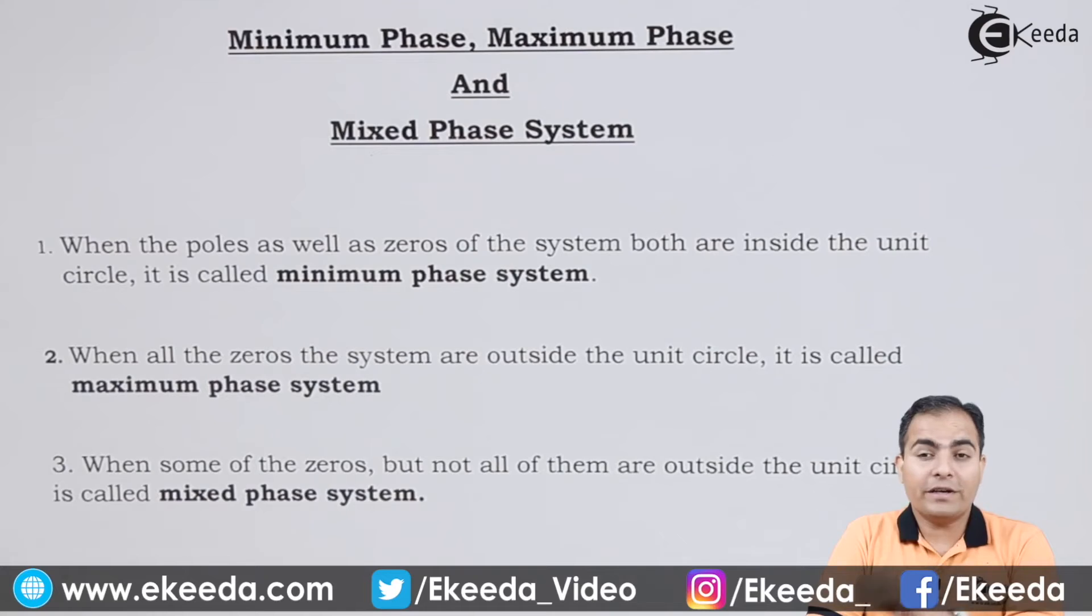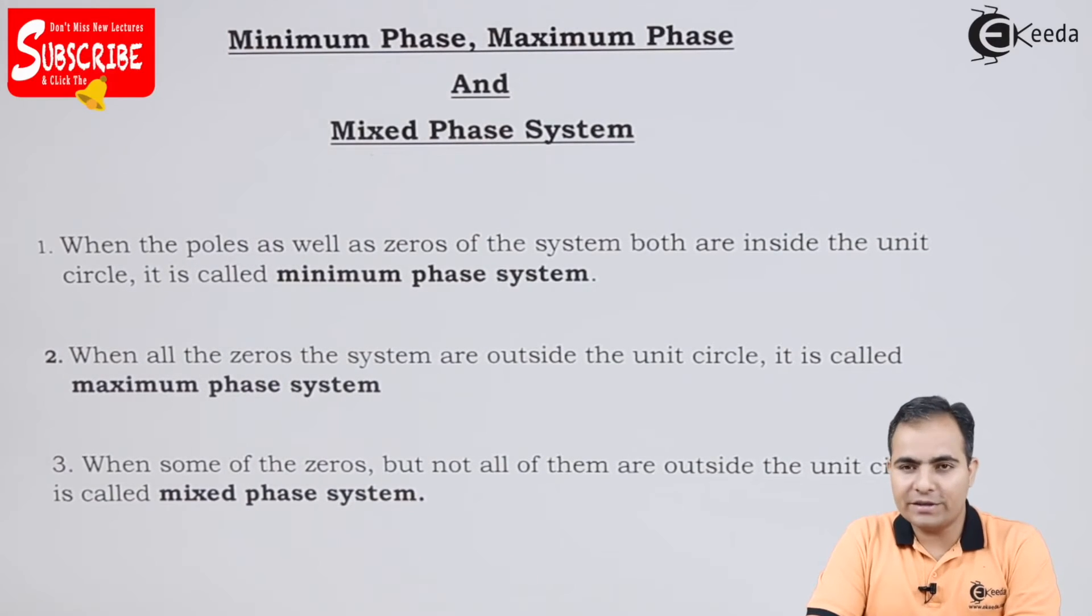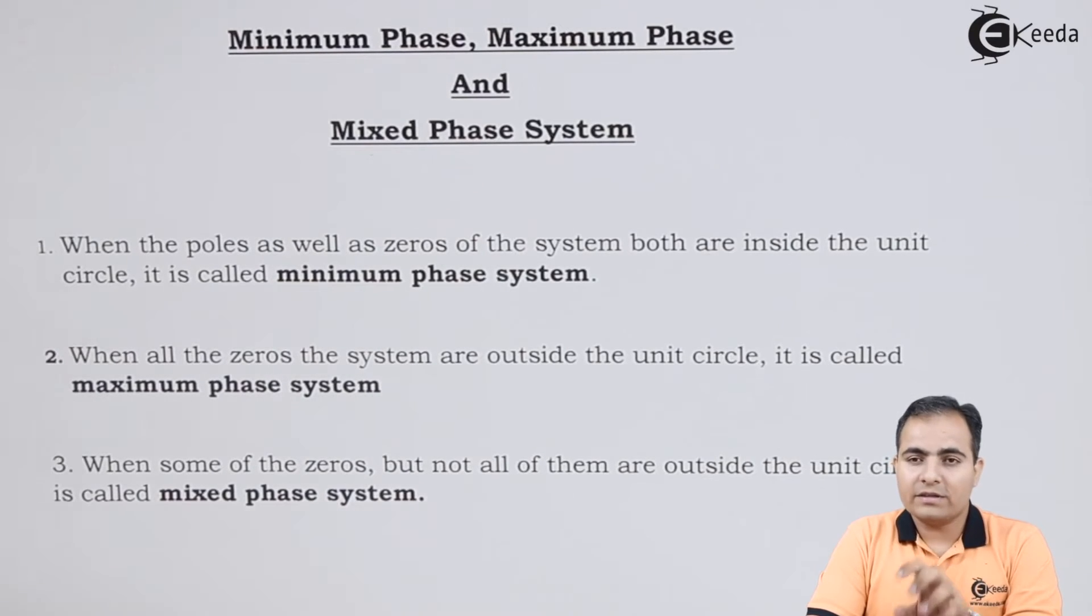What does this mean? If the numerator coefficients—that is, the zeros of the system—have a value greater than 1, then all the zeros are lying outside the unit circle. Then the system is called a maximum phase system.